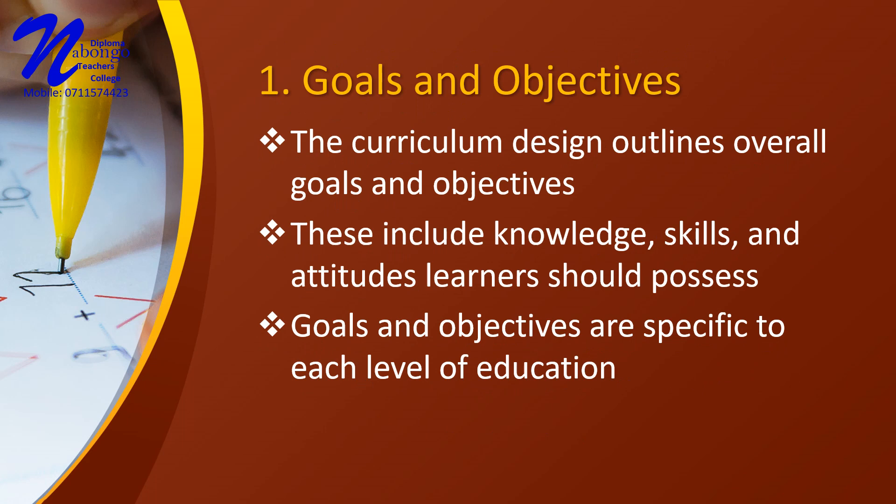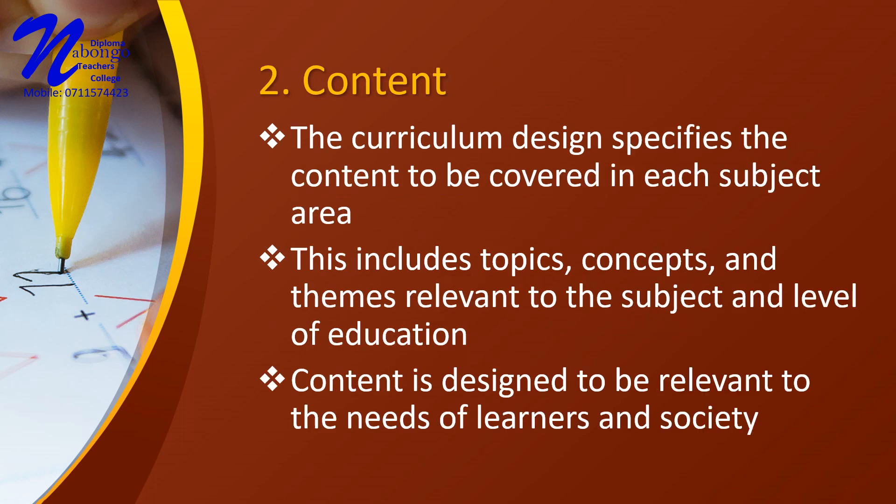Number 1: Goals and Objectives. The curriculum design outlines the overall goals and objectives that are expected to be achieved by the learners. This includes the knowledge, skills, and attitudes that learners should possess at the end of a particular level of education. Number 2: Content. The curriculum design specifies the content that should be covered in each subject area. This includes the topics, concepts, and themes that are relevant to the subject and level of education. The content is designed to be relevant to the needs of the learners and the society in general.